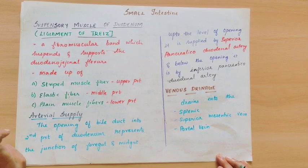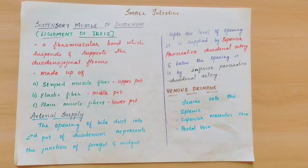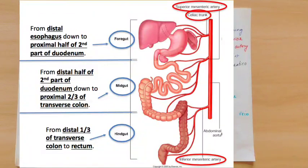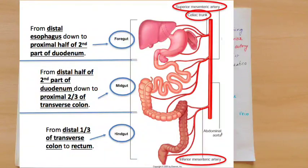Now coming to the arterial supply. You have to know what is foregut, midgut, and hindgut. As you can see in the diagram, in the mouth to the initial part of the duodenum, we have foregut. From the duodenum to two-thirds of the transverse colon, we have midgut.